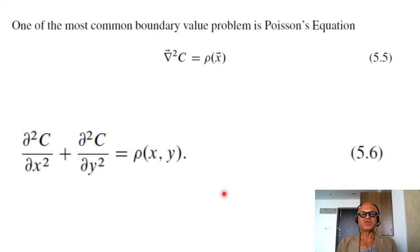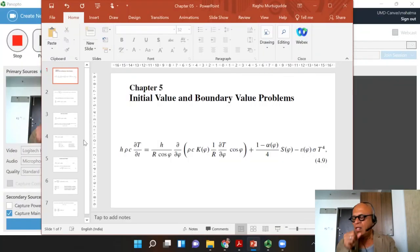Okay, one of the most common boundary value problems is the Poisson equation, so grad squared c is a function of rho: del squared c del x squared plus del squared c del y squared equal to rho xy. Of course, this is very simple looking. It could be temperature with a distribution in x and y, could be electrical charge distribution solving for that, or it could be mass, source and sink, solving for mass distribution in x and y.